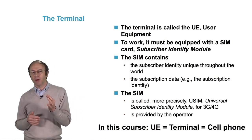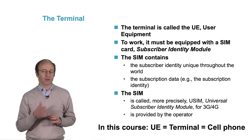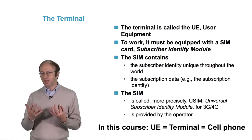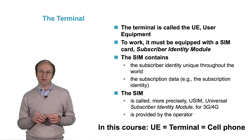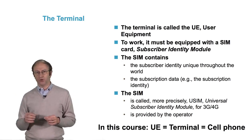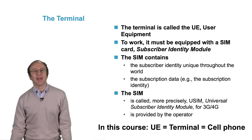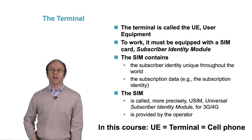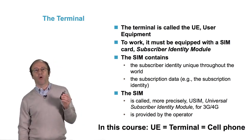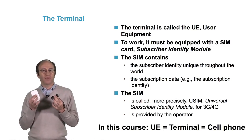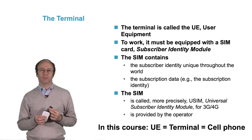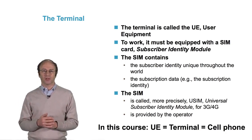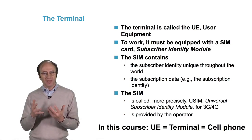This card is called a USIM, or universal subscriber identity module, in 3G or 4G. However, in the videos we use the acronym SIM because it is simpler and often used indifferently for 2G, 3G and 4G. The SIM card is found in equipment such as a smartphone, but it can also be found in a 4G key or a router connected to a laptop for mobile internet access. In this course, we are not going to differentiate between types of terminals — all terminals will be treated identically.